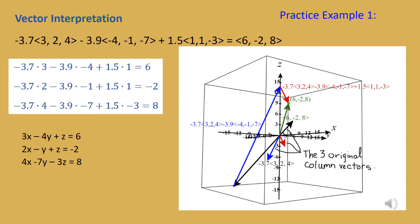A second geometric interpretation is to look at the system in terms of column vectors. The coefficients of x — 3, 2, 4 — form a column vector; the coefficients of y — negative 4, negative 1, negative 7 — form a column vector; and the coefficients of z — 1, 1, negative 3 — form the third column vector. The solution set is a set of scalars that multiply those column vectors to equal the answer column vector 6, negative 2, 8.